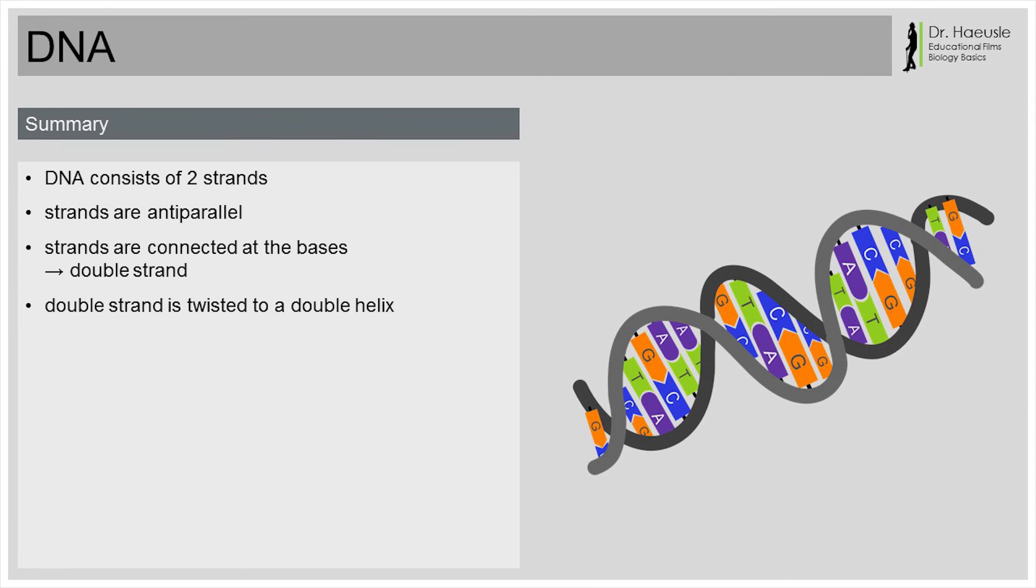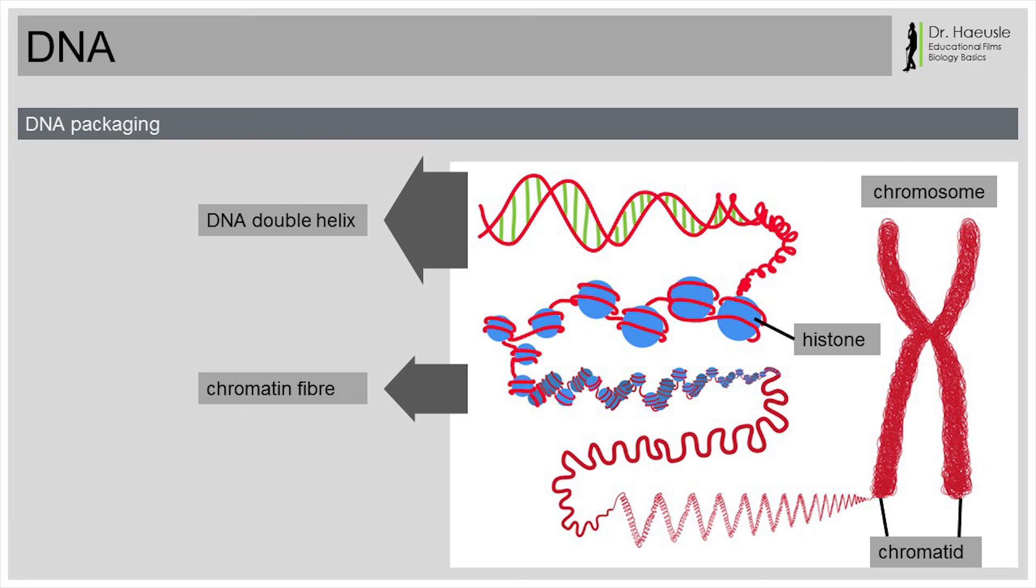We have learned that the DNA consists of two strands that run anti-parallel to each other. The two strands are connected and form a double strand. This double strand is twisted to a double helix. However, the DNA is not usually existent in this form in the cells. Instead, it is packaged more compactly. This is shown in the sketch.